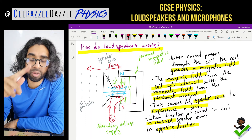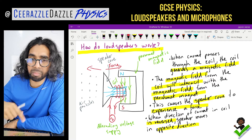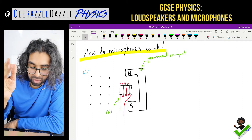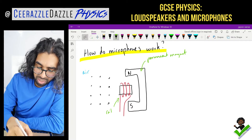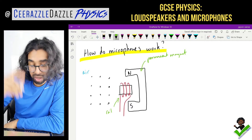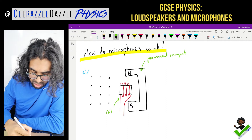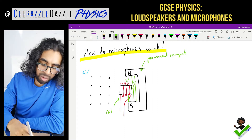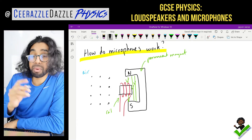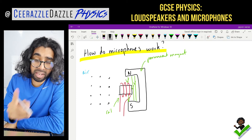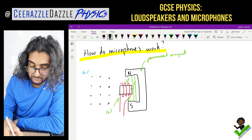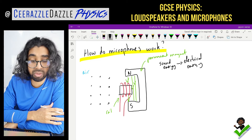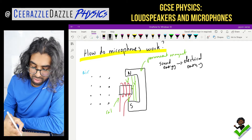Now let's move on to microphones. How do microphones work? It's similar but kind of different. They look the same at the start: we have a permanent bar magnet with field lines going from north to south, and we have a coil. But the main difference is that for a microphone, sound energy is converted into electrical energy — the opposite of a loudspeaker.